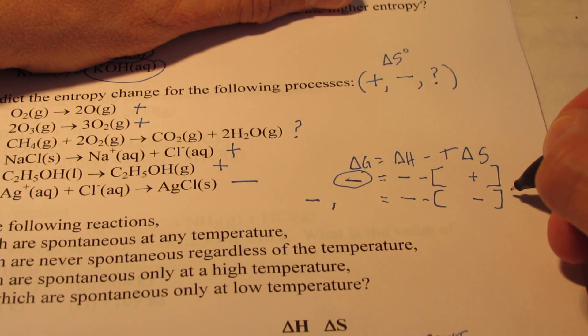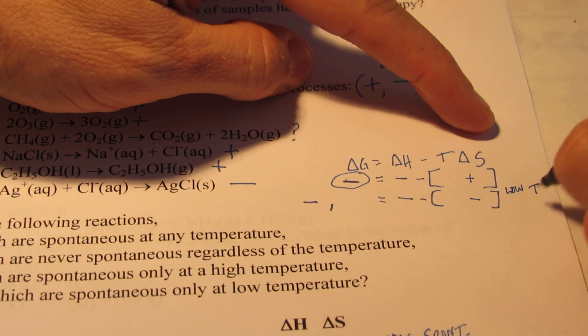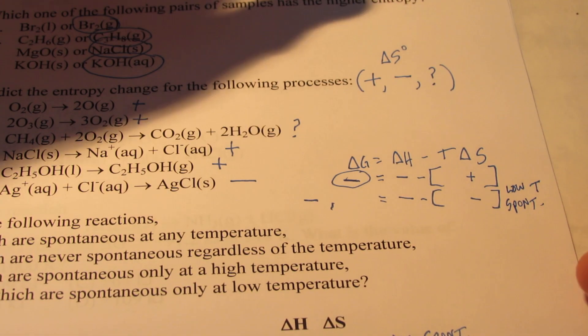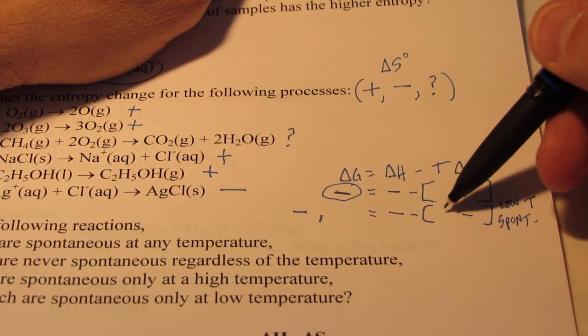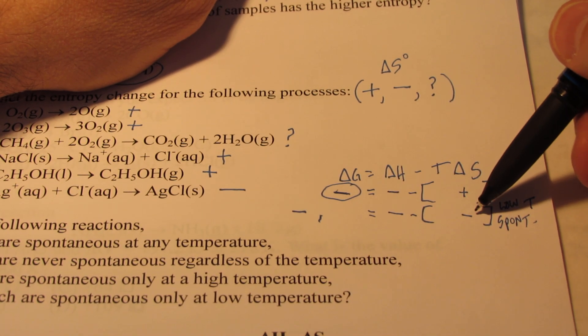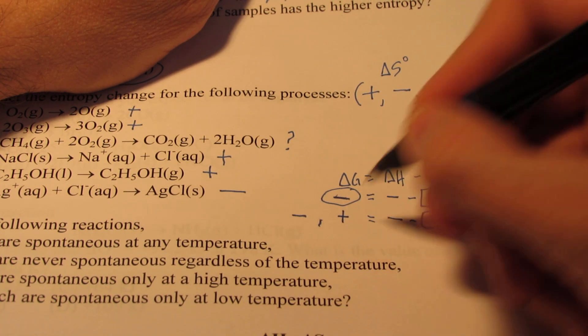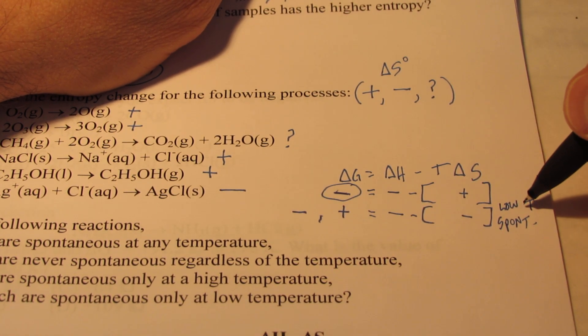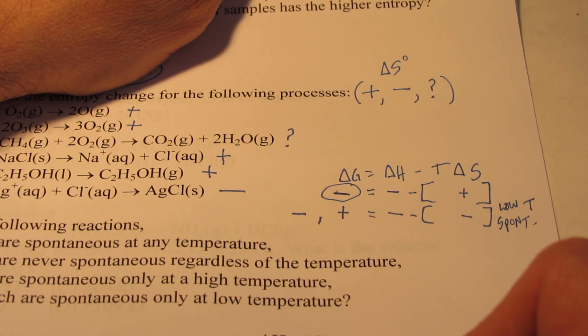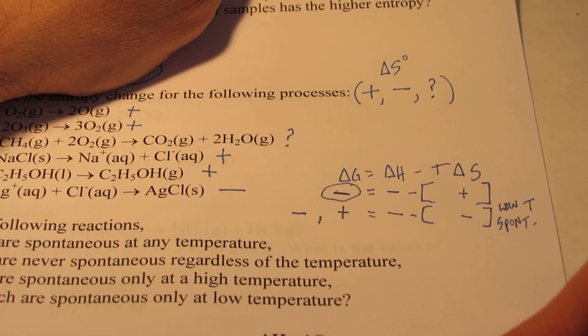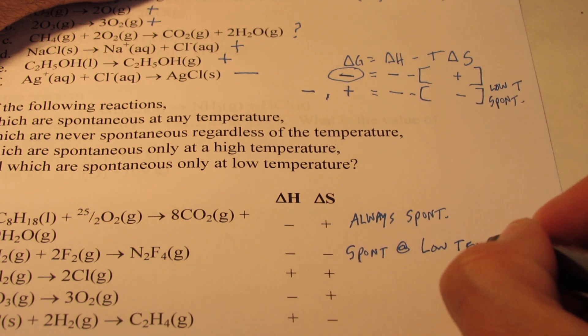Now, that's going to be at low temps. So, low temp, we would expect this reaction to be spontaneous. Think about the math. As temperature gets bigger, let's say this is a thousand Kelvin. Now, we have a big negative number we're subtracting. That's like adding a big positive. And that could change that to a positive delta G. So, at high temperatures, it would not be spontaneous. But at low temperatures, it is. So, this guy here would be spontaneous at, oh, you guys can't see it, spontaneous at low temperatures.